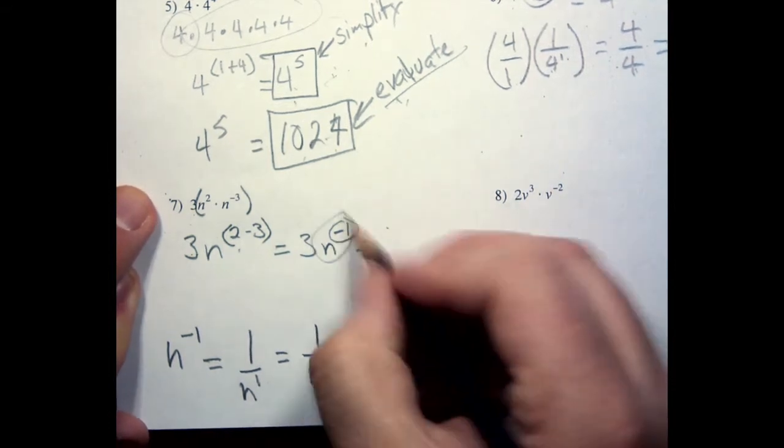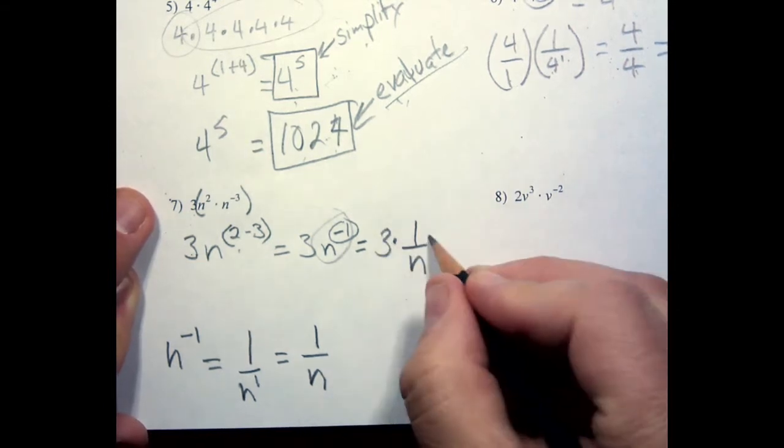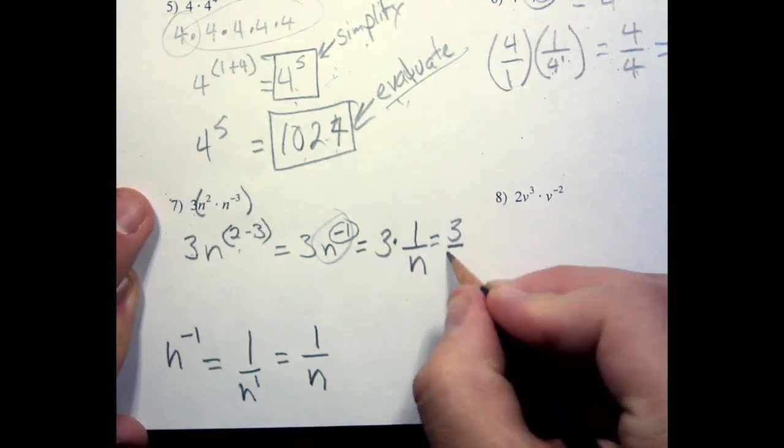So this whole thing here becomes 1 over n. So 3 times 1 over n is really just 3 over n.